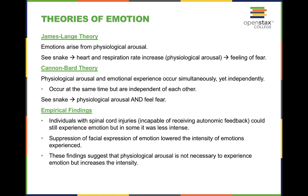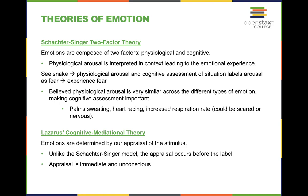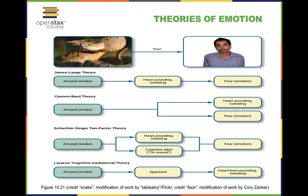Let's look at some theories of emotion: the James-Lange theory, the Cannon-Bard theory, the Schachter-Singer two-factor theory, and the Lazarus cognitive mediational theory. These are in the slides for studying; for visual learners, let's go through the visual together. The James-Lange theory states that when an arousal situation occurs, we first have the physiological experience — heart pounding and sweating — and then experience the emotion, such as fear. The sequence is: arousal situation, physiological response, then emotion.